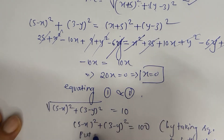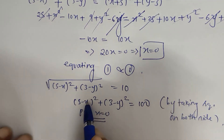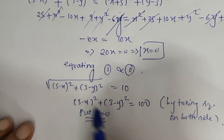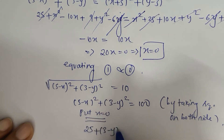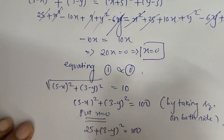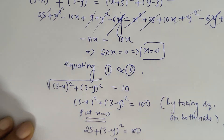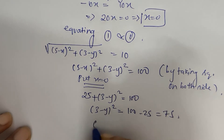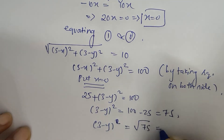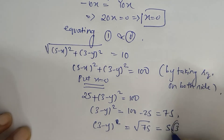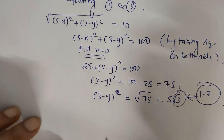Substituting x equals 0 into the equation, we get 5 squared plus 3 minus y whole square equals 100, so 25 plus 3 minus y whole square equals 100. Therefore, 3 minus y whole square equals 75, and 3 minus y equals plus or minus square root of 75, which is plus or minus 5 root 3. Using root 3 equals 1.7, we get 5 root 3 equals 8.5.